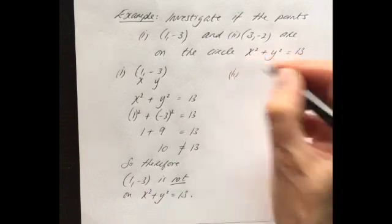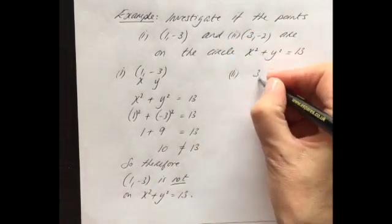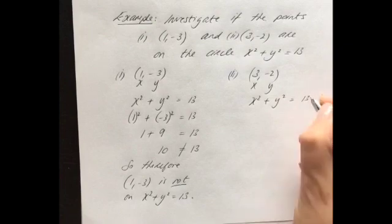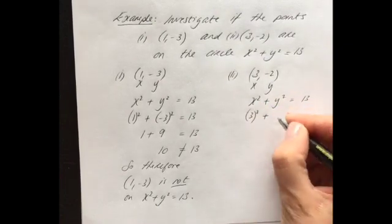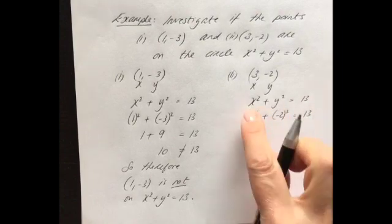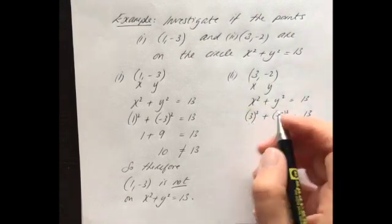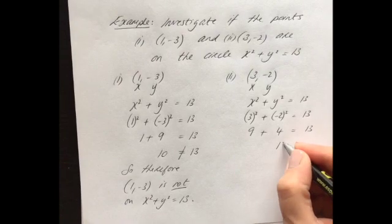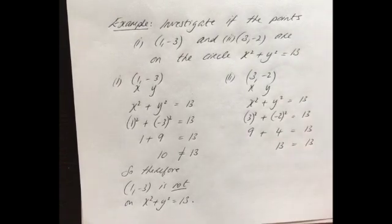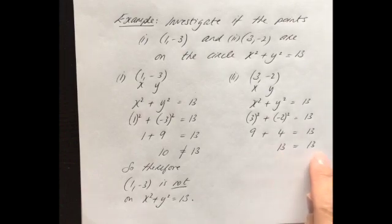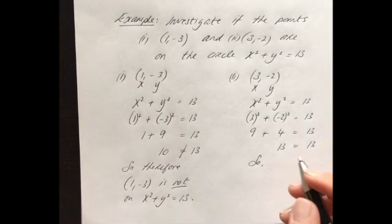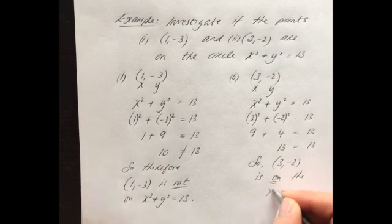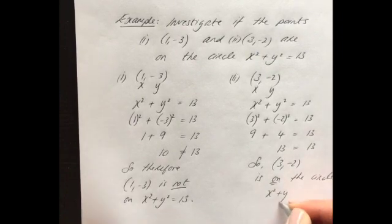Now let's test if the point (3, -2) is on the circle. We take x = 3 and y = -2 and substitute into the equation: 3² + (-2)² = 9 + 4 = 13. That works out to be 13, which equals the right hand side of 13. So the left hand side equals the right hand side, and we can conclude that (3, -2) is on the circle x² + y² = 13.